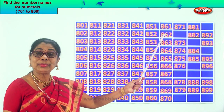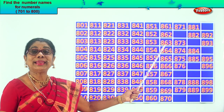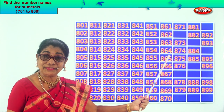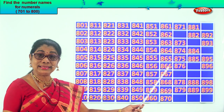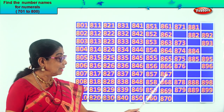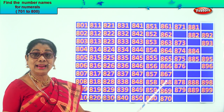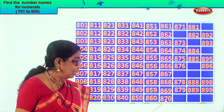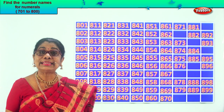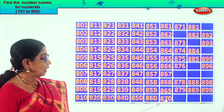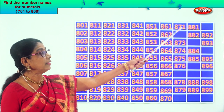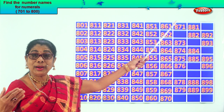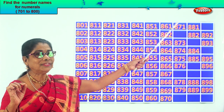861, 862, 863, 864, 865, 866, 867, 868, 869, 870. After 70 comes 71 — so 871. After 1 comes 2, after 71 comes 72. So the missing number here is 872, then 873, 874, 875, 876. After 6 comes 7 — after 76 comes 77.